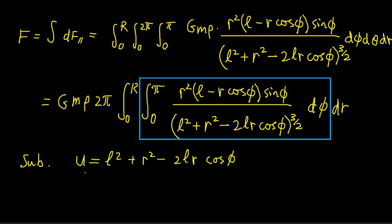So let's make the u substitution, u equals L² + r² - 2Lr cos φ. And as we shall see, the rest of the calculations will be fairly routine.